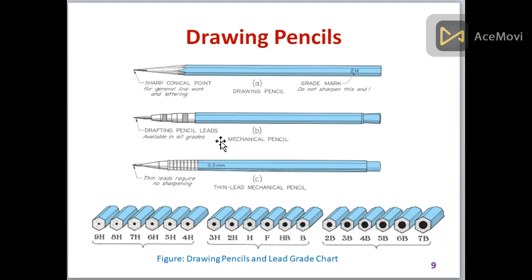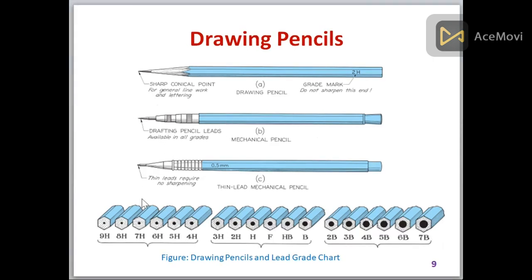Drawing pencils - now moving toward drawing pencils. There are different kinds of drawing pencils. These are the grades of drawing pencils: 9H, 8H, 7H, 6H, 5H, 4H, 3H, 2H, H, F, HB, and B, and then it goes toward 2B, 3B, 4B, 5B, 6B, and 7B. These are smooth thin lead pencils. These are mechanical pencils, and these are drawing pencils having sharp conical points. This thin lead requires no sharpening. These are the different types of lead pencils that are used in drawing.